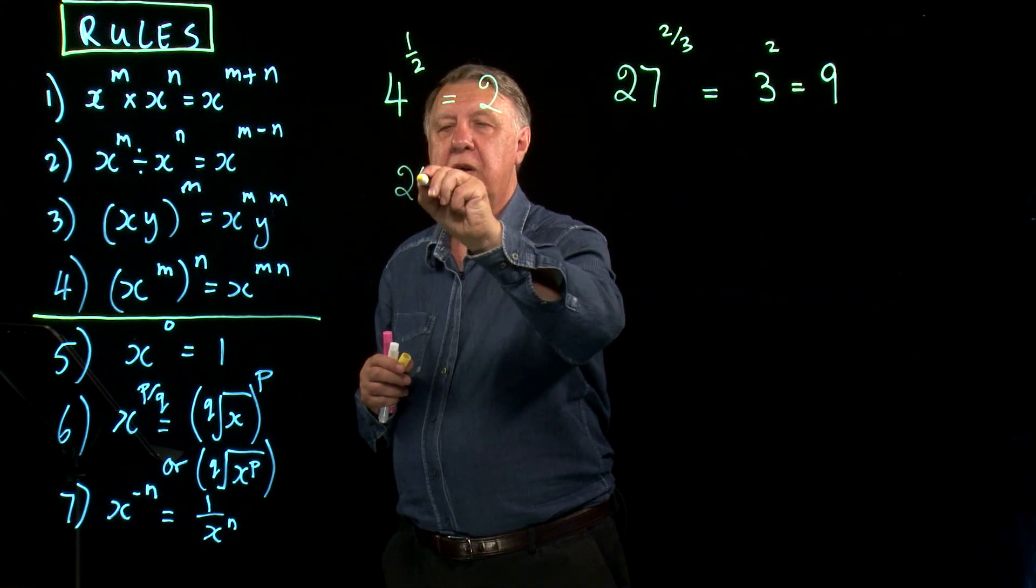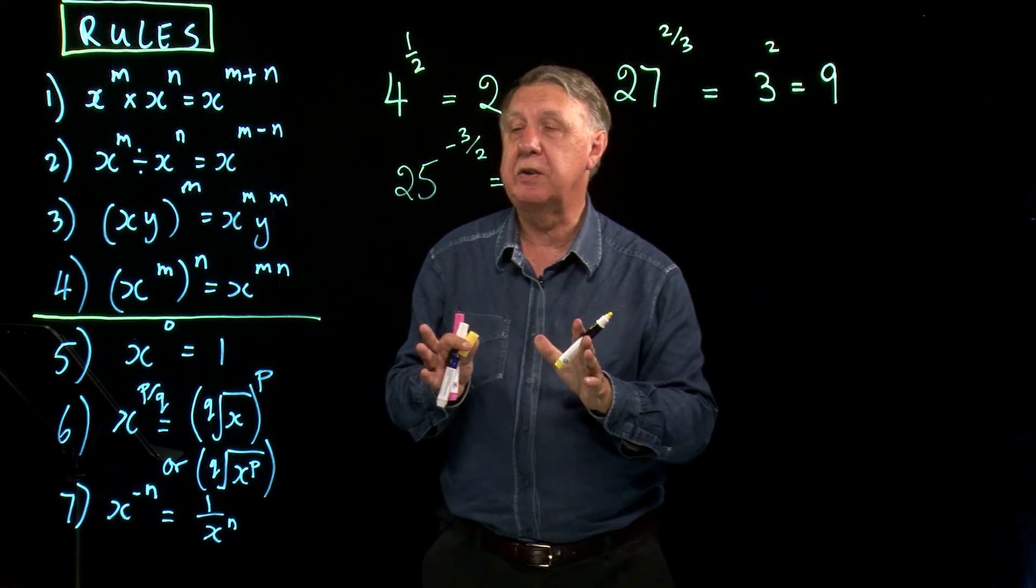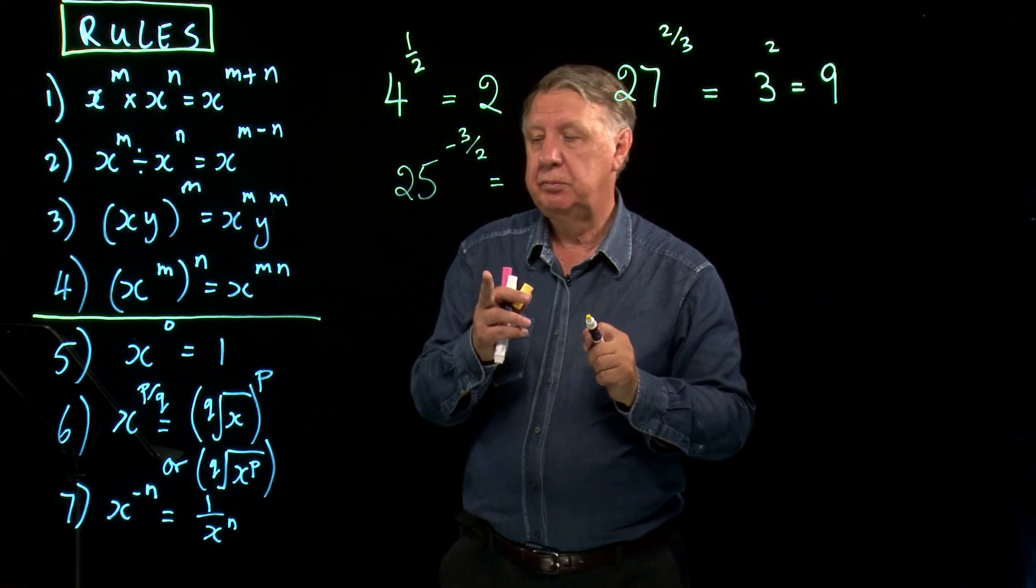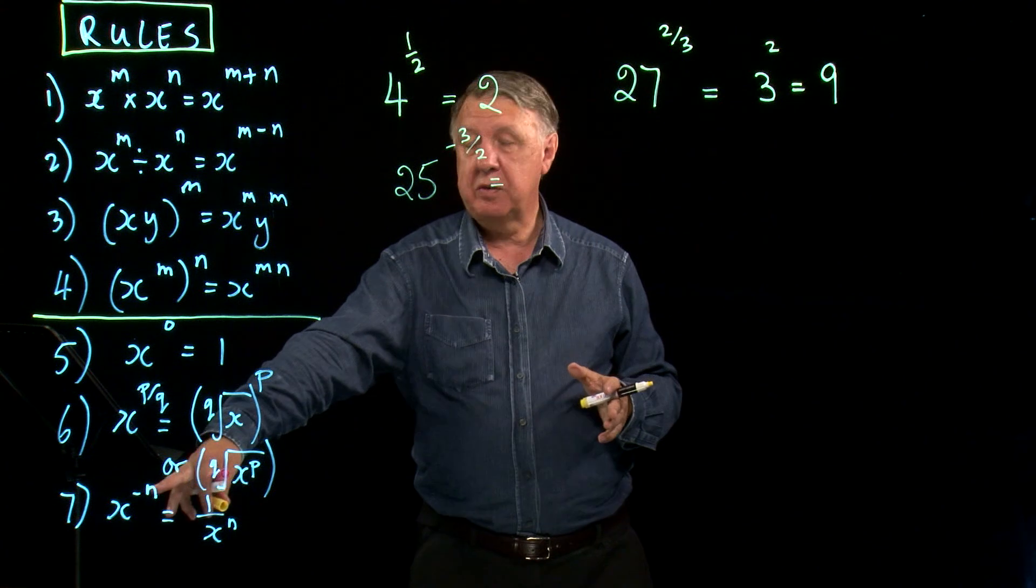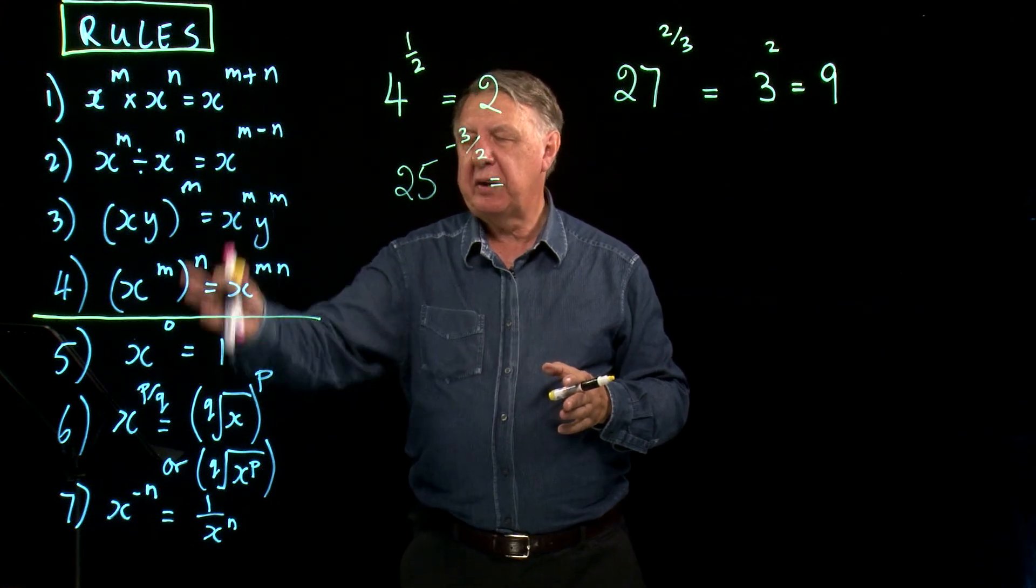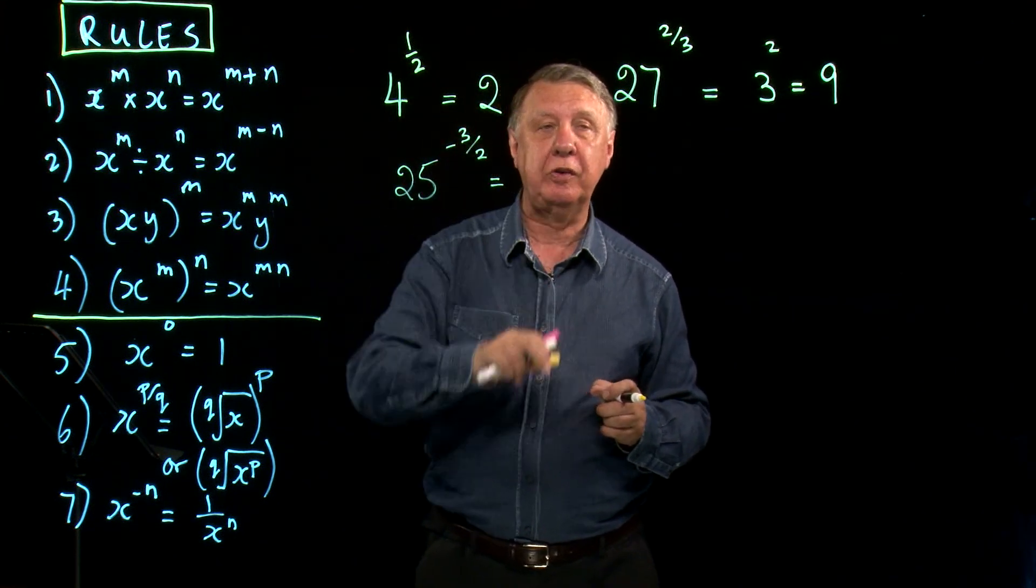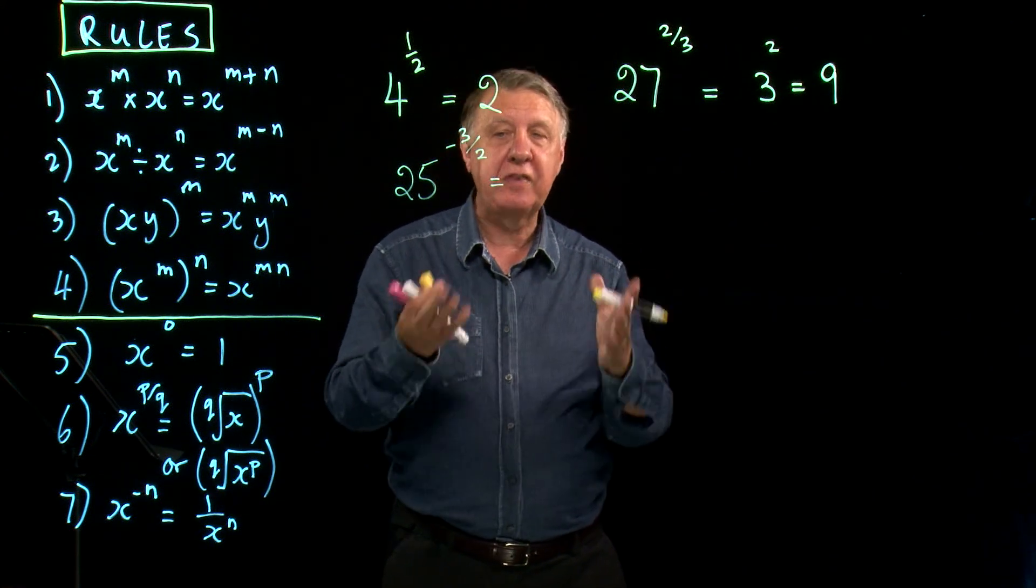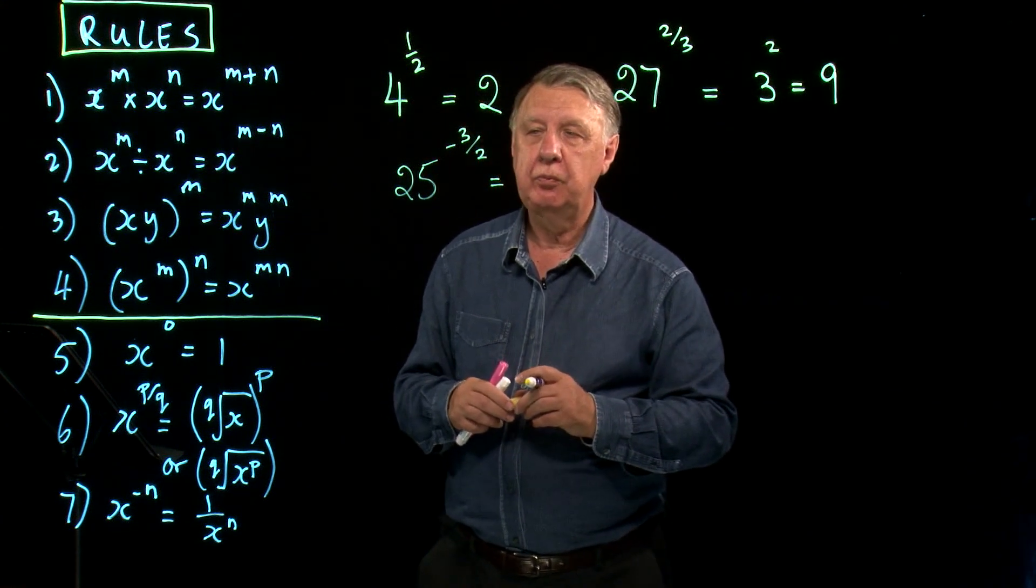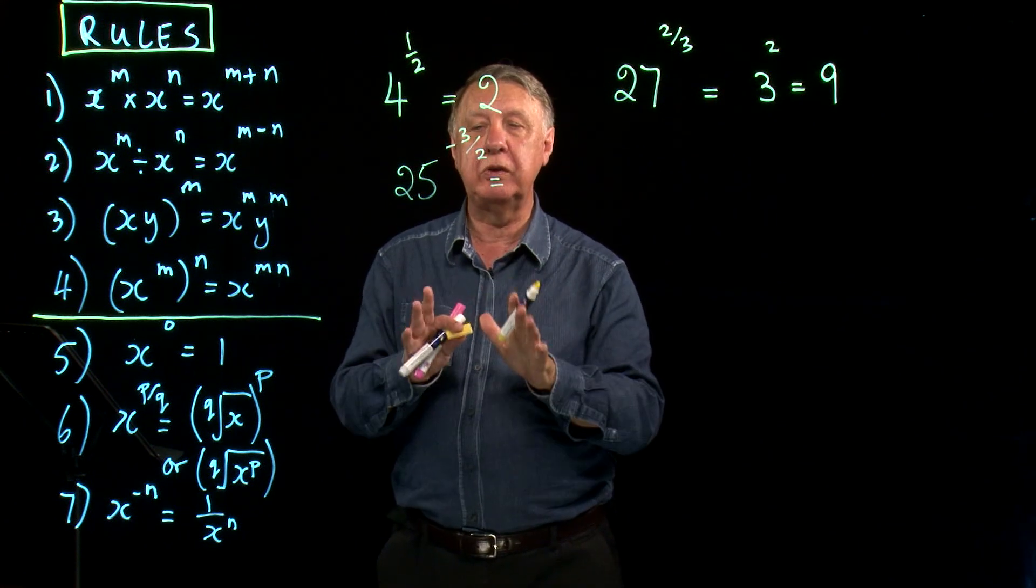Let's try another one. 25 to the minus 3/2. Remember you're not allowed a calculator in core one. What's different about this one? It's got a negative power. The rule with negative power is right at the bottom of my list here. What is the important thing to remember? A negative power means something different. It means 1 over. The mathematical word for 1 over is probably the most forgotten word in mathematics: the reciprocal. So this is a reciprocal and it only tells you that it's a reciprocal.